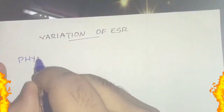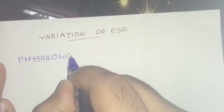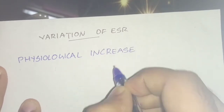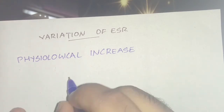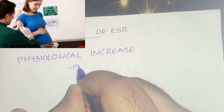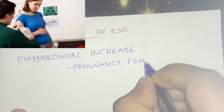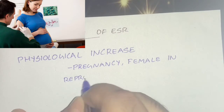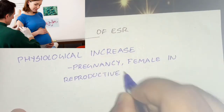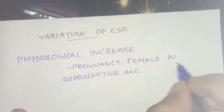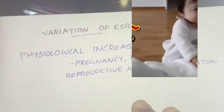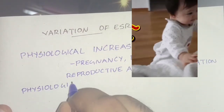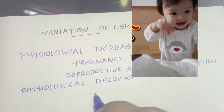For variation in ESR — physiological and pathological. Physiological increase is seen in females in the reproductive age, during pregnancy, and during menstruation. Physiological decrease is seen in males and in newborns.